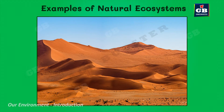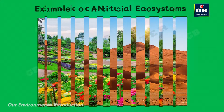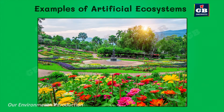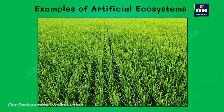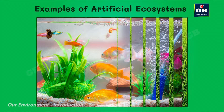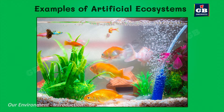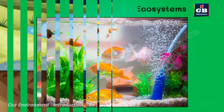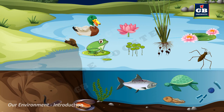Forests, ponds, and deserts are examples of natural ecosystems, whereas gardens, crop fields, and aquariums are examples of artificial ecosystems.